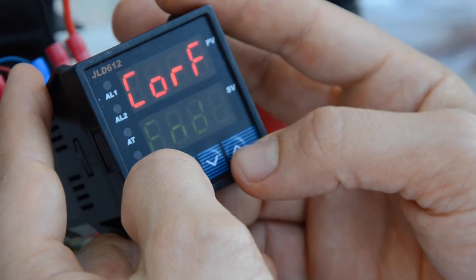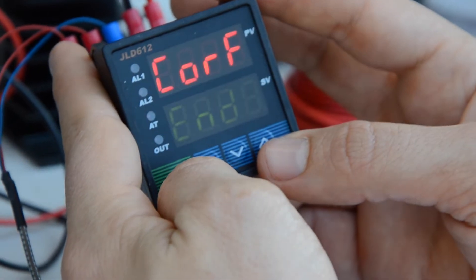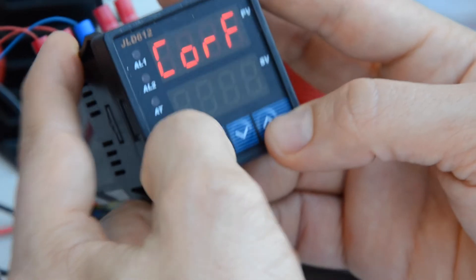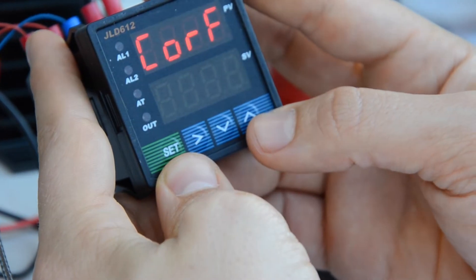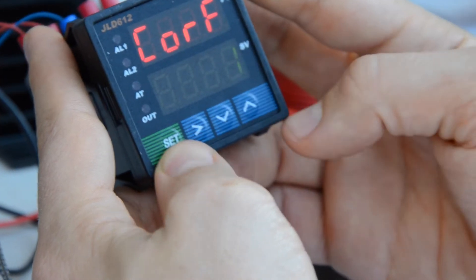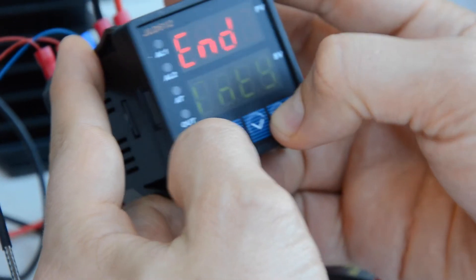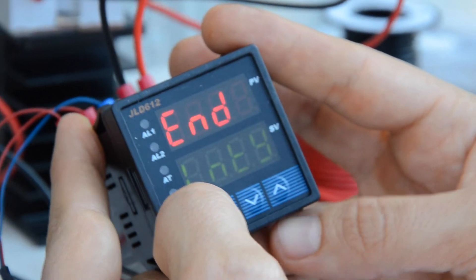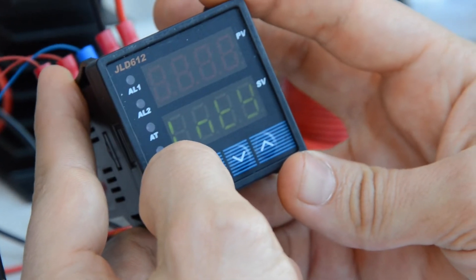And then the next one is the CRF, which literally stands for Celsius or Fahrenheit. If you set that one, zero is Celsius and one is Fahrenheit. So we have ours set to one. And that goes through the end setting, to end our parameter settings.